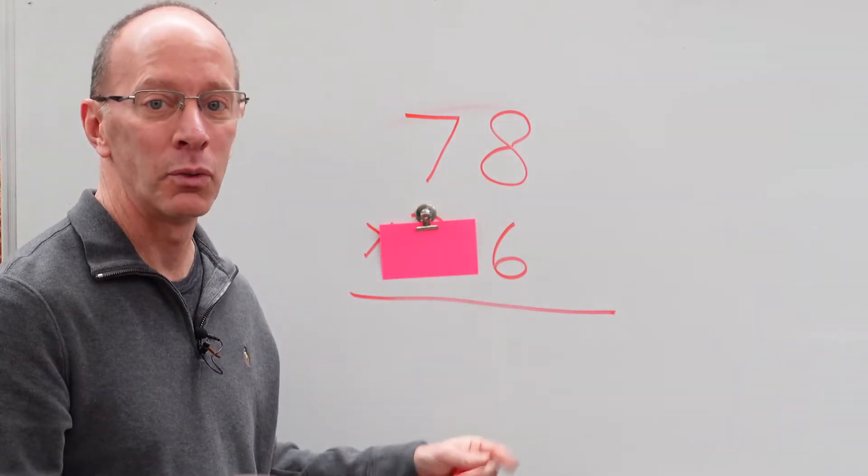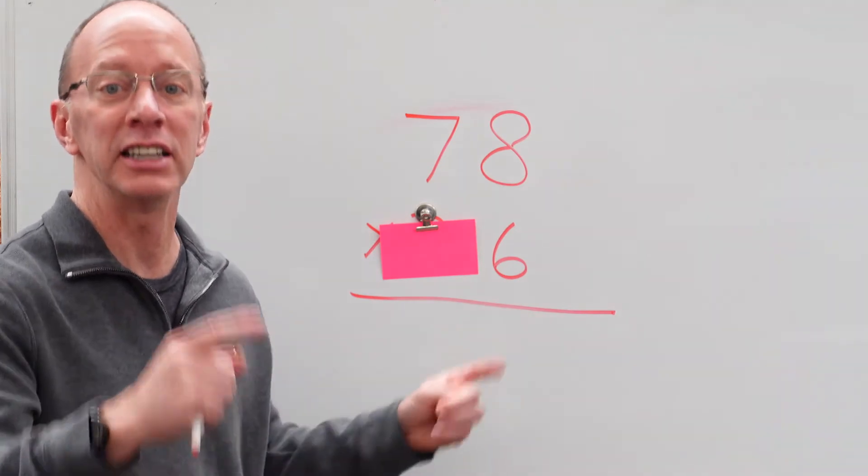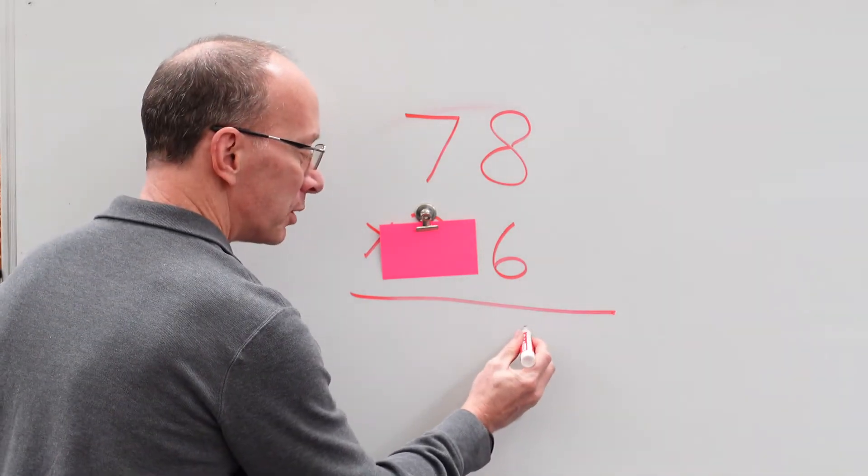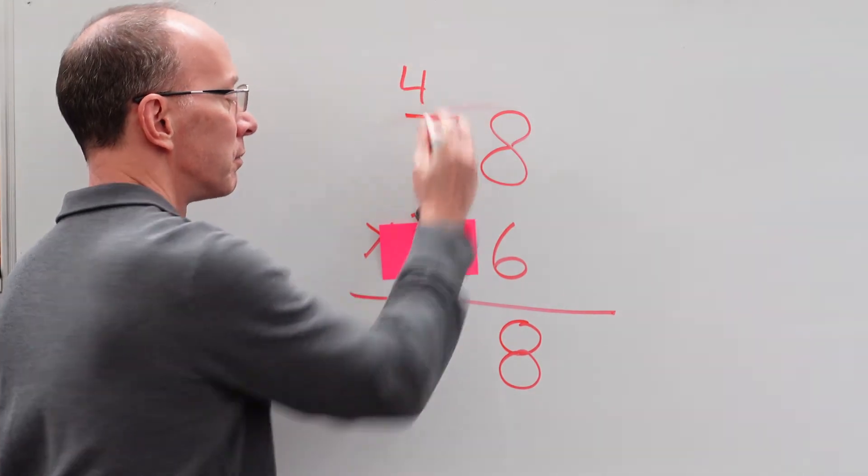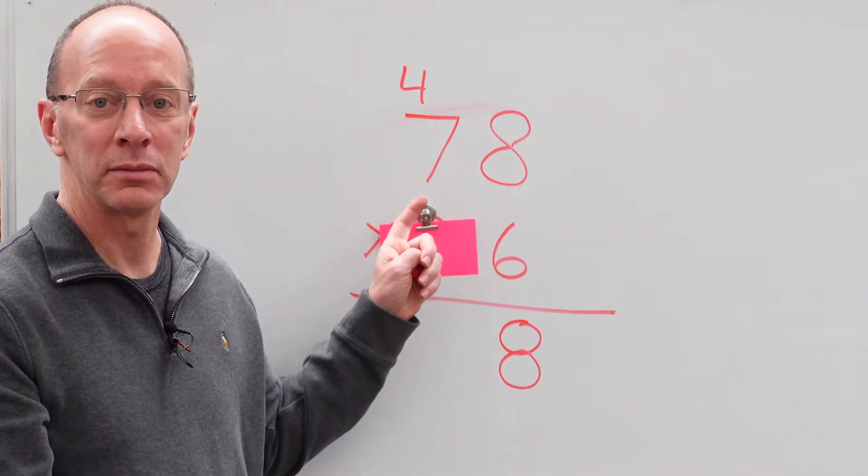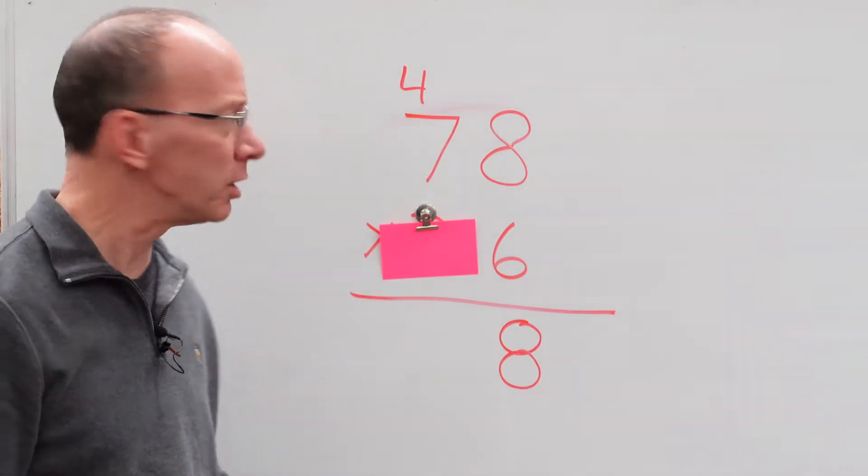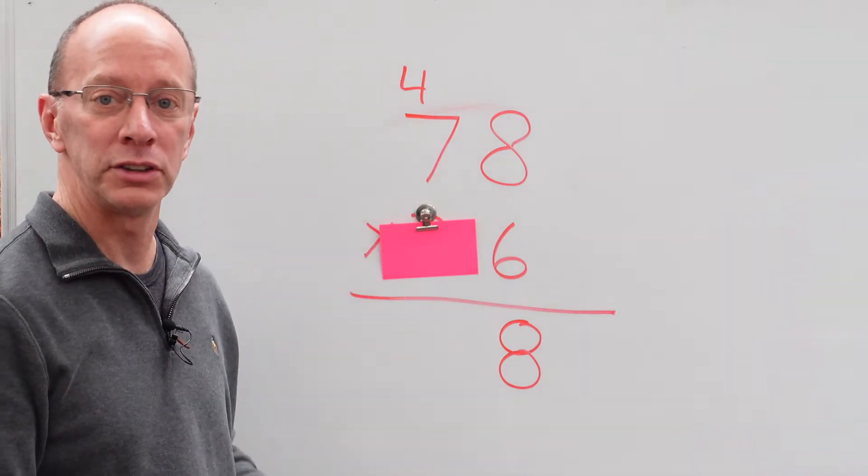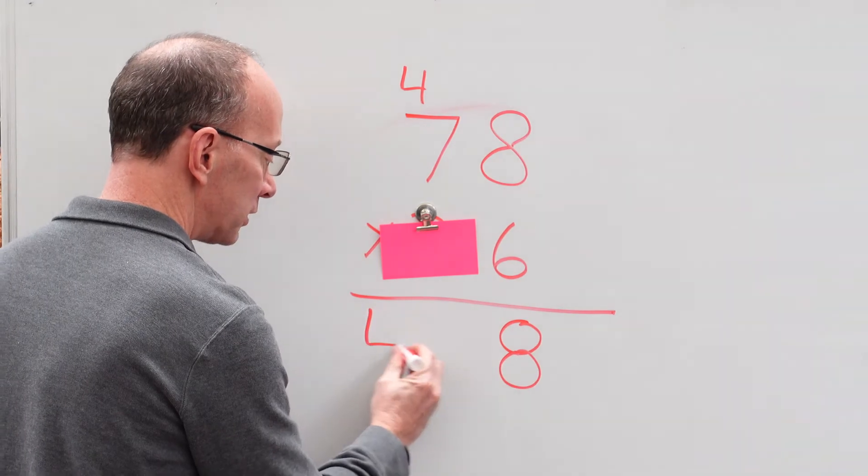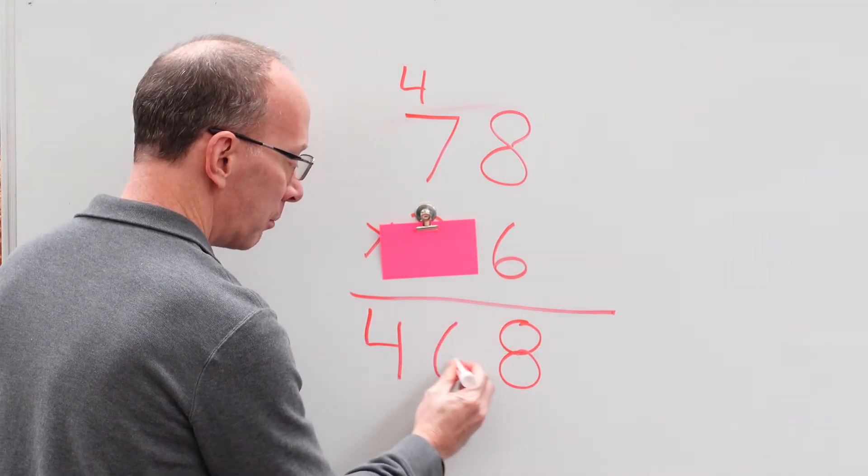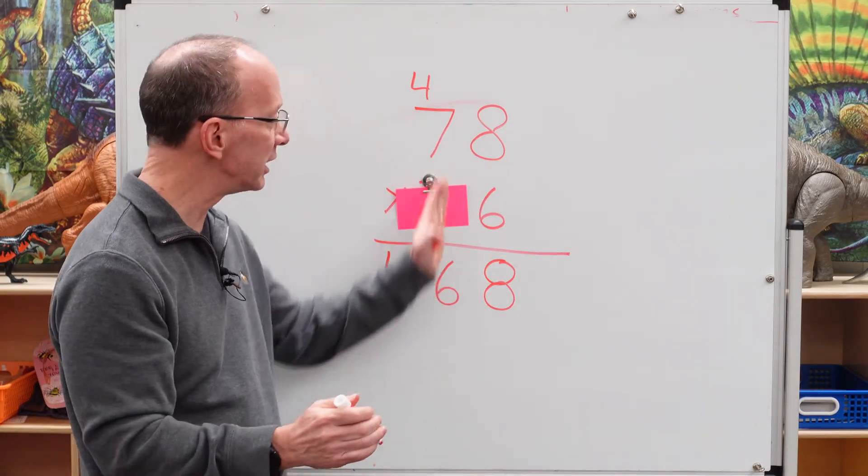All right. 8 times 6. What is it? 48. 6 times 8 is 48. Put the 8 right here, and the 4 right here. What is 6 times 7? Oh, yeah. 42. 42 plus 4, 46. Put the 46 right here. Make sure you are writing this very neatly.